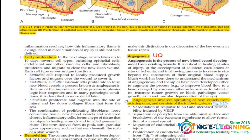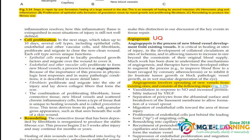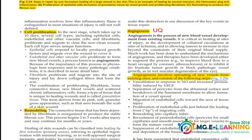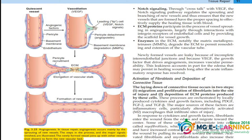The next topic is angiogenesis. Angiogenesis is a UQ. You should know the definition and the steps involved in angiogenesis. If you represent it in diagrammatic form, that is very good. The diagrammatic representation is likely to appear as a UQ.